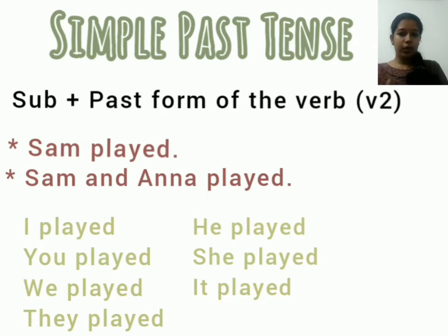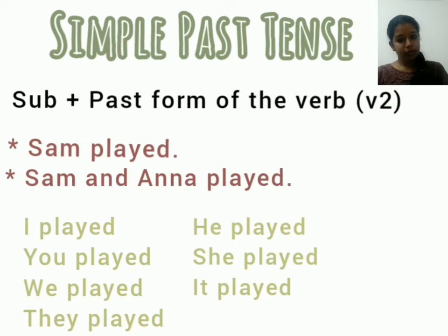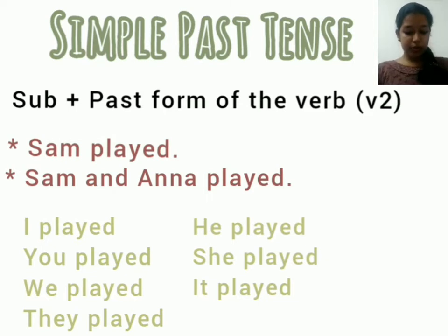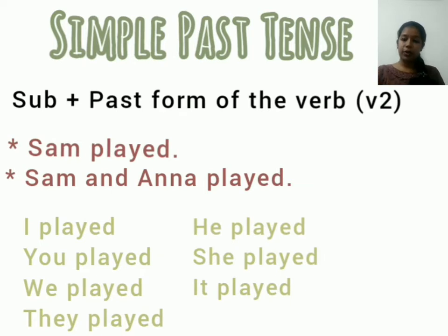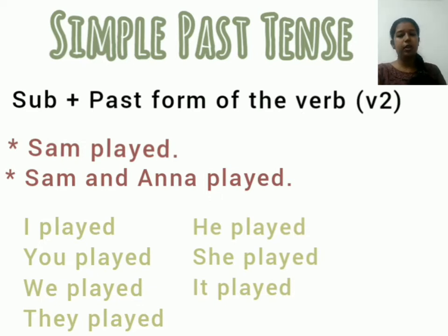For Activity B, we can discuss it together. The instruction says: fill in the blanks with the simple past tense forms of the verbs given in the brackets. When you do activities related to tenses, you want to give importance and focus on the subject — identify the subject carefully and whether it is singular or plural. That mainly depends on the tense.